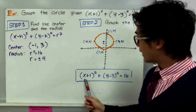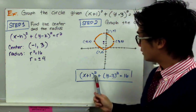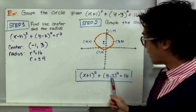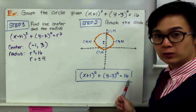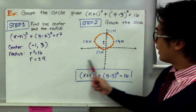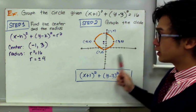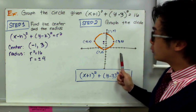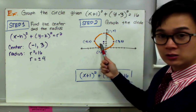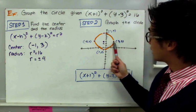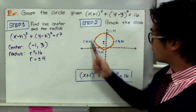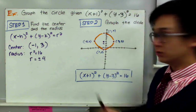Given the equation (x + 1)² + (y − 3)² = 16, this is the graph of our circle formed by using the center and the radius.